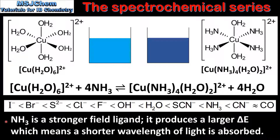To summarize: ammonia is a stronger field ligand. It produces a larger energy difference between the two sets of d orbitals, which means a shorter wavelength of light is absorbed.